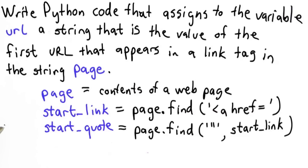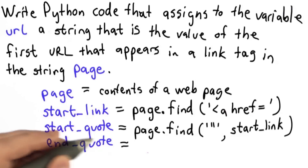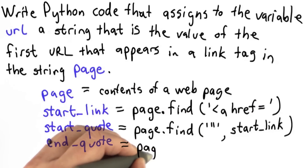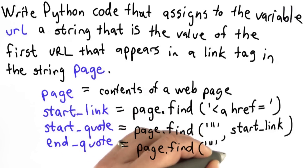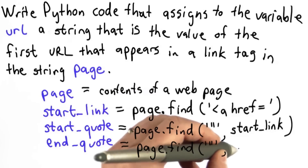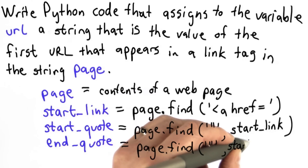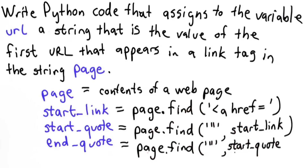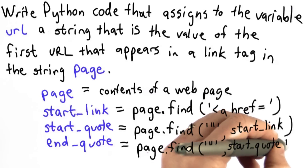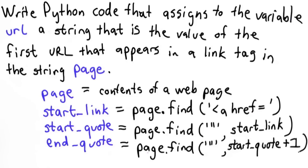We also need to find the end quote — we'll call that end_quote. To find the end quote, we don't want to start from start_link; if we started looking from there, we'd find the start_quote again. To find the end quote, we need to look starting from after the start_quote. So we're going to use page.find again, looking for a double quote. We need to start from start_quote plus one, because if we started from just start_quote, we'd find start_quote itself. Starting one after that position, we'll find the first quote after it — that's the quote that ends the string.